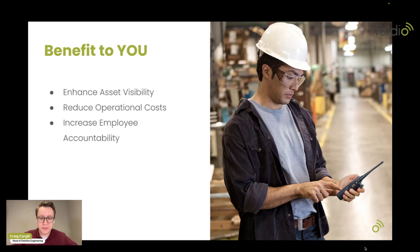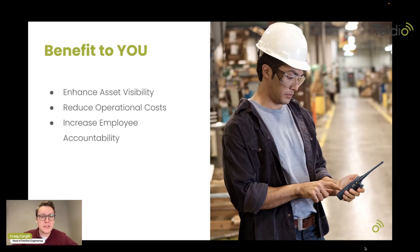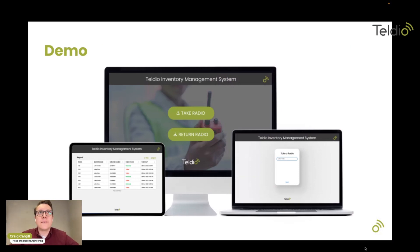Lastly is to increase employee accountability. If nobody knows you have something, you're probably less likely to take care of it — whether that's leaving a radio on a park bench after lunch or actively trying to take that item. Knowing that there's a system in place that can track that you have that item really does make a difference in the mentality of employees. They're less likely to misuse assets and more likely to remember they have an item because they checked it out.